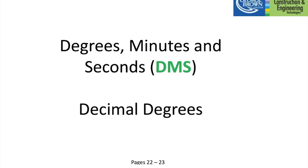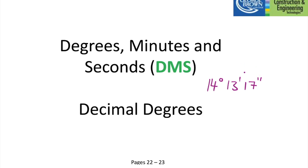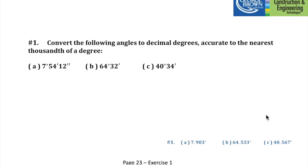The next topic is degrees, minutes and seconds — a way of expressing fractional angles used in surveying. For example, a latitude/longitude coordinate might look like 14° 13' 17". A degree has 60 minutes and a minute has 60 seconds, just like time. Turn to page 23 for the exercise.